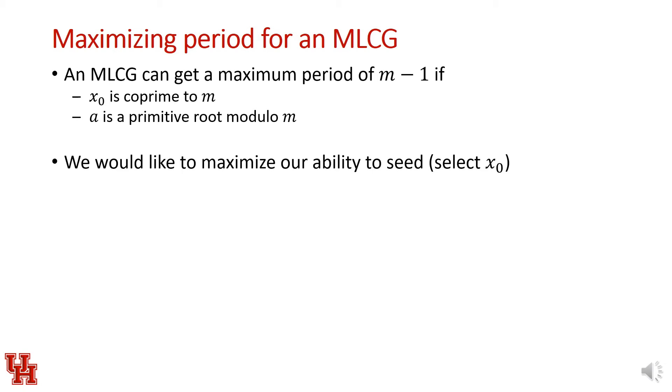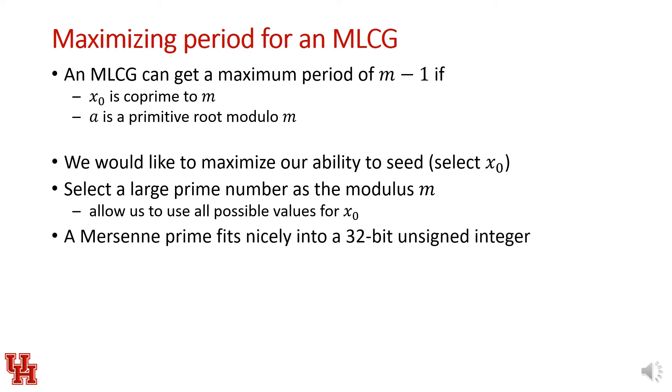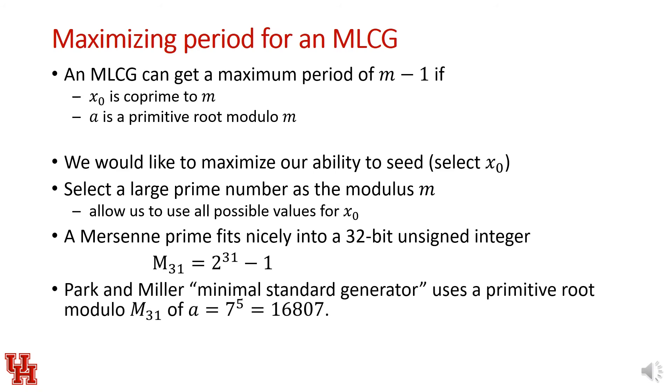If we'd like to maximize our ability to seed a random number generator, then we'd like to select a large prime number as the modulus m. This would allow us to select any seed value, since if m is prime, any seed value that we select is going to be co-prime with m. This allows us to use all possible values for our seed x_0. One number that works nicely for this is the Mersenne prime, which fits nicely into a 32-bit unsigned integer. That Mersenne prime, M31, is 2^31 - 1.